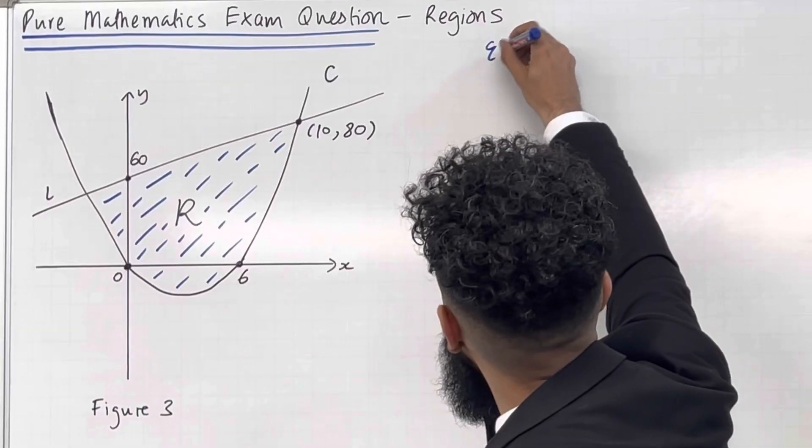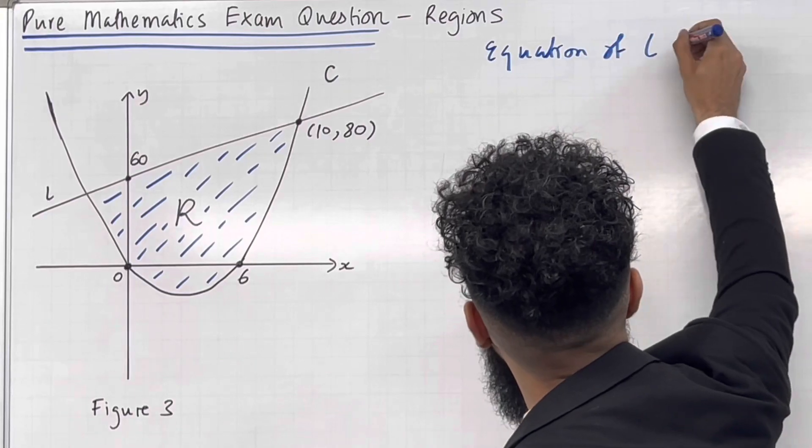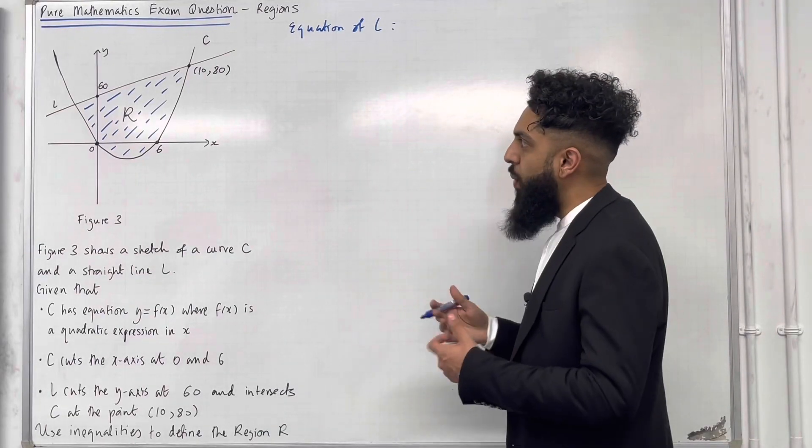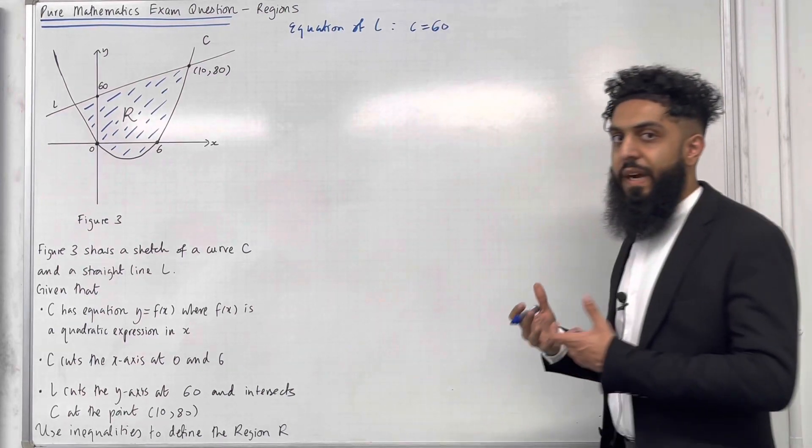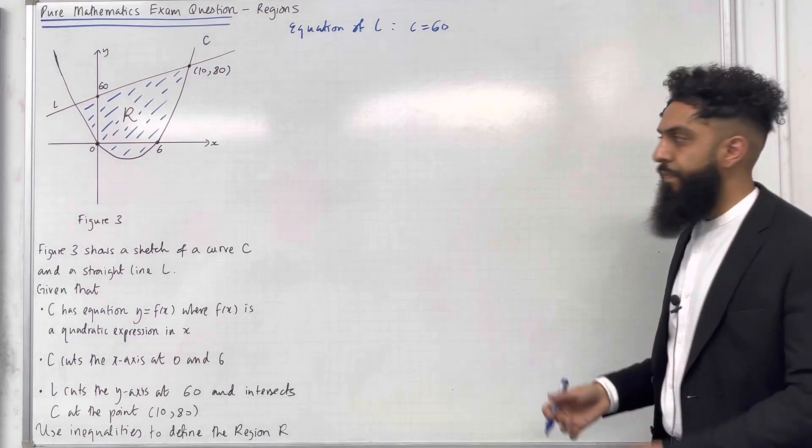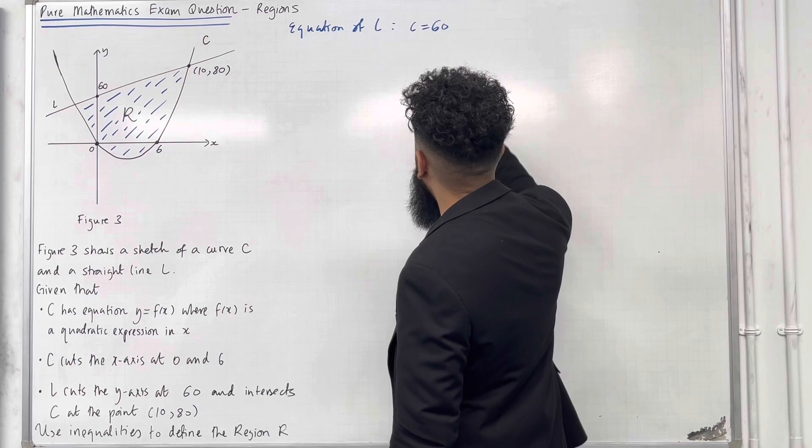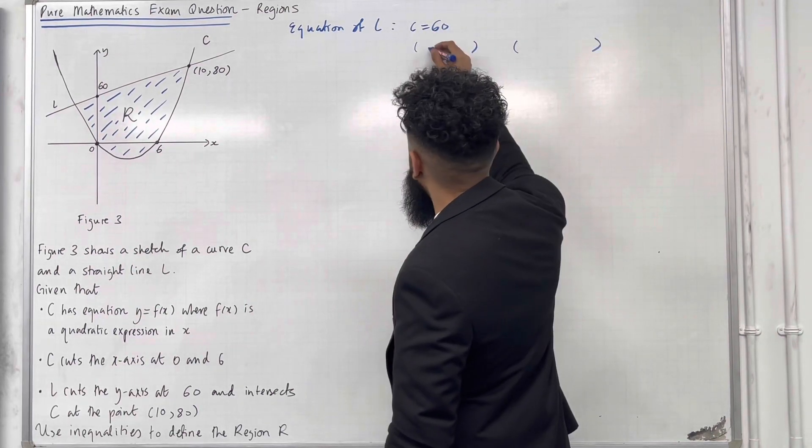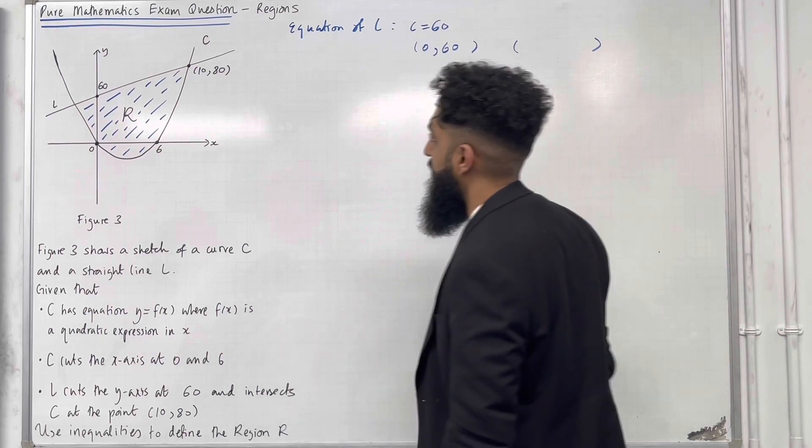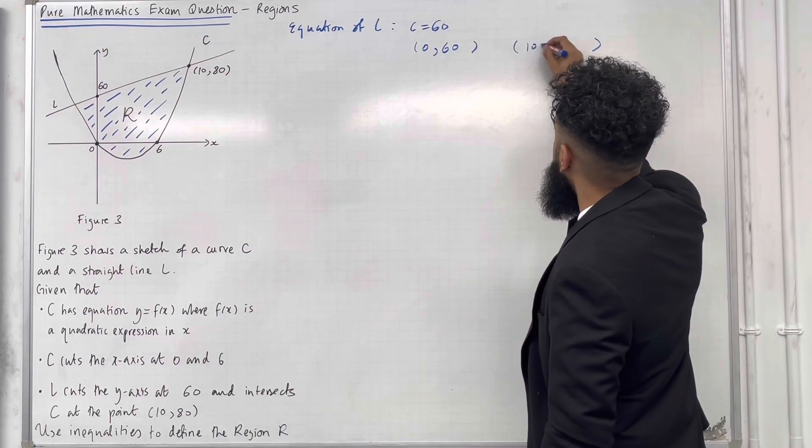So equation of L. I know that the Y intercept is C equals 60. I need to find the gradient of the straight line L. The straight line L passes through two coordinates. The first coordinate is 0, 60, the Y intercept and the second coordinate is 10, 80.